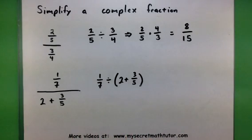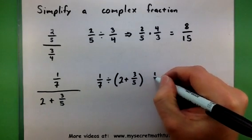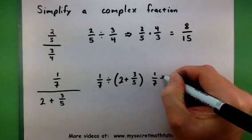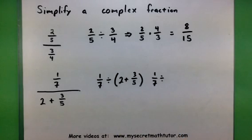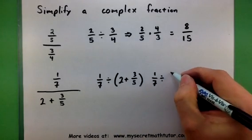Now, notice how I can't just flip it just yet, because I have more than one thing inside those parentheses. Let's actually work to get these two together, and then we'll go ahead and flip and multiply. So, in order to combine fractions, we need a common denominator. So, what can I turn the 2 into?